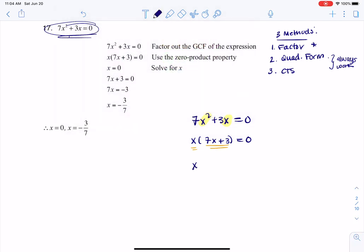So from the zero product property, either x is 0 or 7x + 3 is 0, and when I solve this equation, I'm going to get x = -3/7, and that's where I get my two answers. All right, thanks so much. Bye.